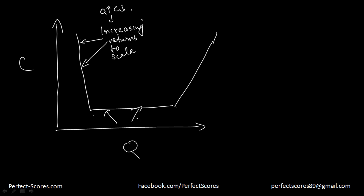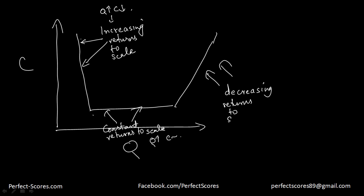The middle section is what we call constant returns to scale. That means even if you increase your output, your cost is actually going to remain the same — you keep your average cost constant. The third section is what we call decreasing returns to scale. As you increase your output, your cost also increases. This is what we mean by increasing returns to scale, constant returns to scale, and decreasing returns to scale. When a firm starts, it has very high cost, but as it increases output it reaches its minimum cost, stays there for a while, and after that the cost tends to increase.